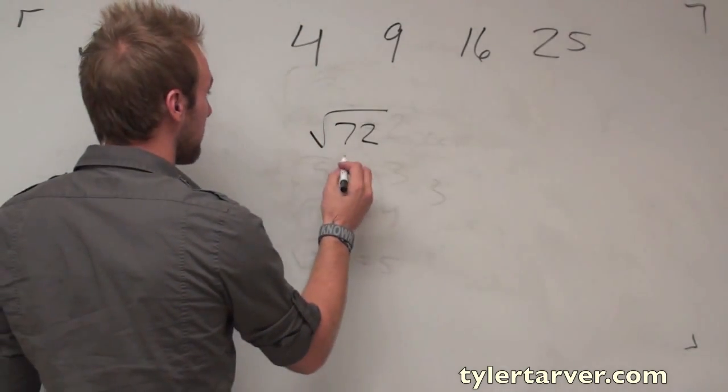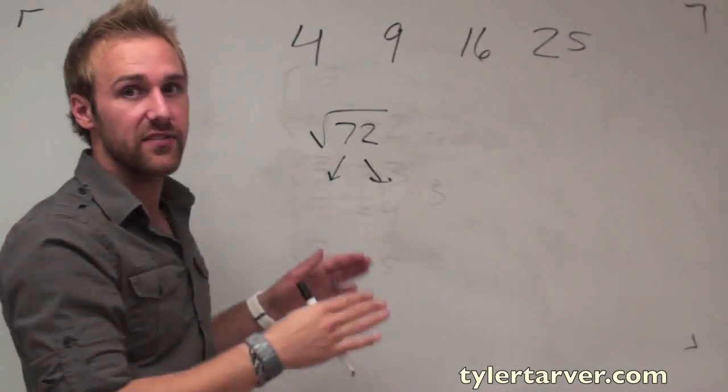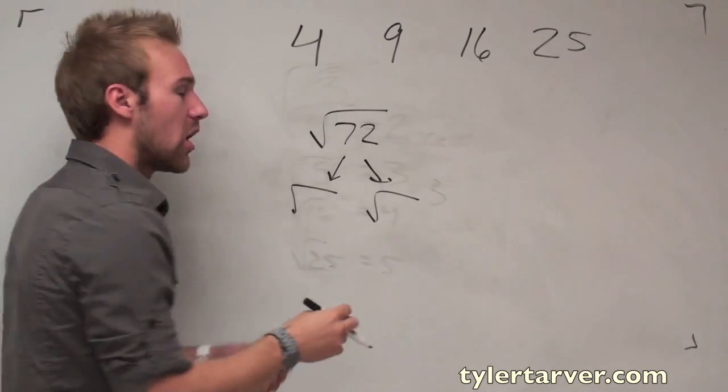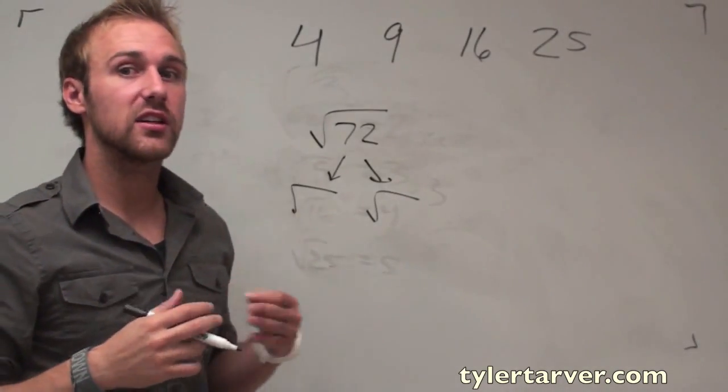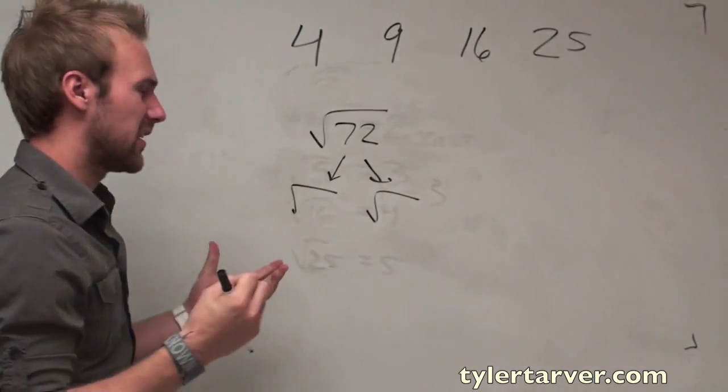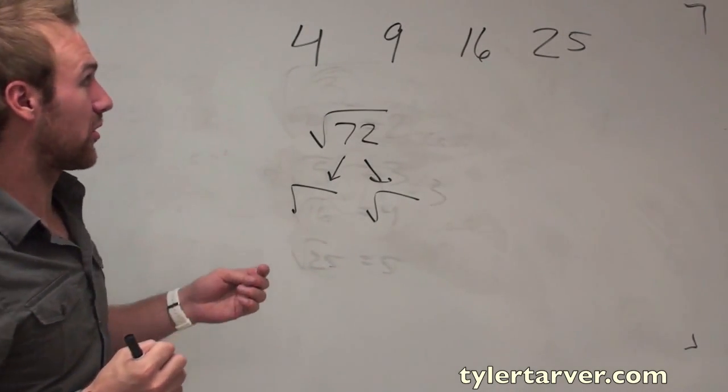So, simplest radical form. What I want to do is I want to split seventy-two into two radicals, okay? Now, you are allowed to do this as long as it's multiplication factors of it, okay? I don't know if that's the correct term, but we'll say yes, because assuming you probably don't know since you're watching this tutorial, all right?